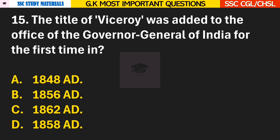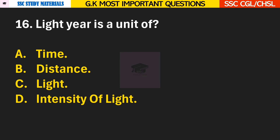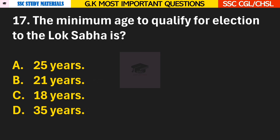Question 15: The title of Viceroy was added to the office of the Governor General of India for the first time in? Answer D — 1858 AD. Question 16: Light year is a unit of? Answer D — it is a unit of distance. Question 17: The minimum age to qualify for election to the Lok Sabha is? Answer A — 25 years.